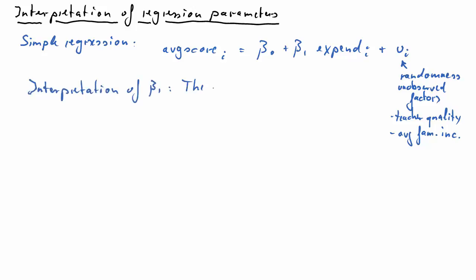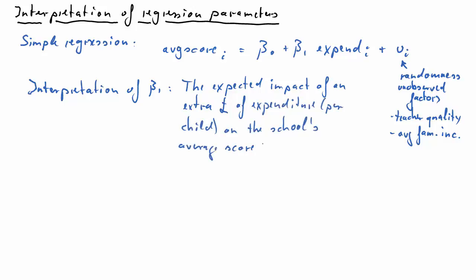So let's think about the interpretation of beta 1. Beta 1 would be interpreted as the expected impact an additional dollar of funding per child would have on the school's average score. But really there are two caveats to this interpretation, and we have to be very acutely aware of those. The first is that in our mind we have to be holding everything that is in the error term U constant.